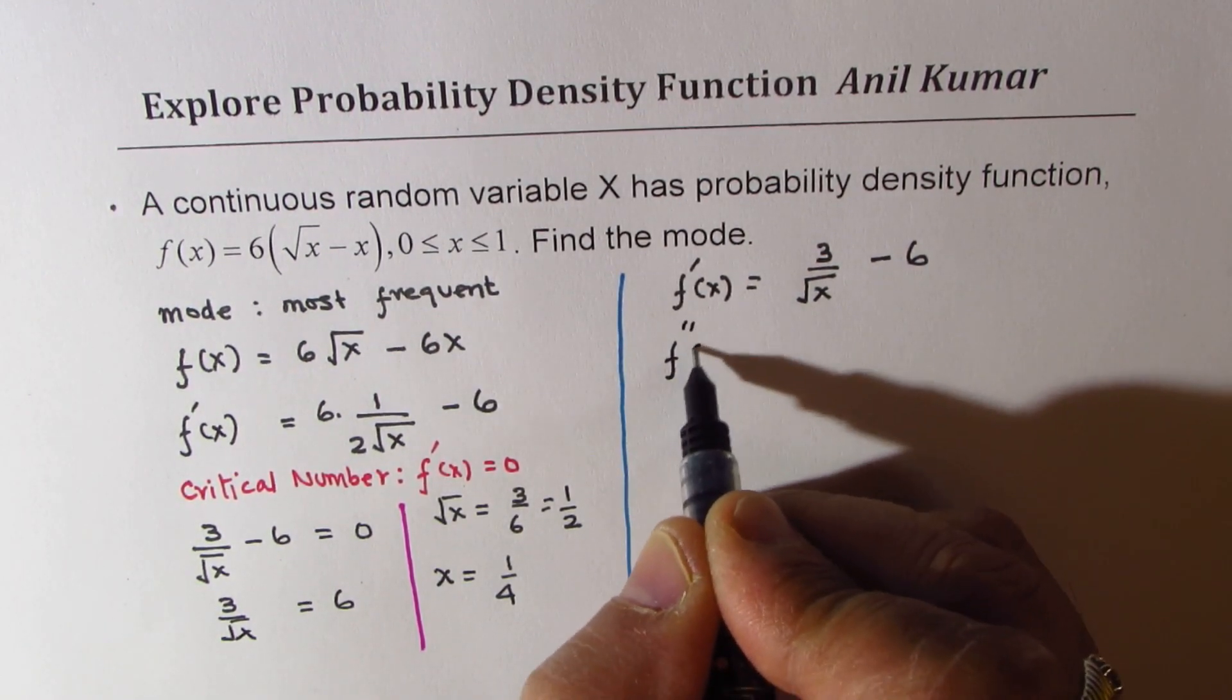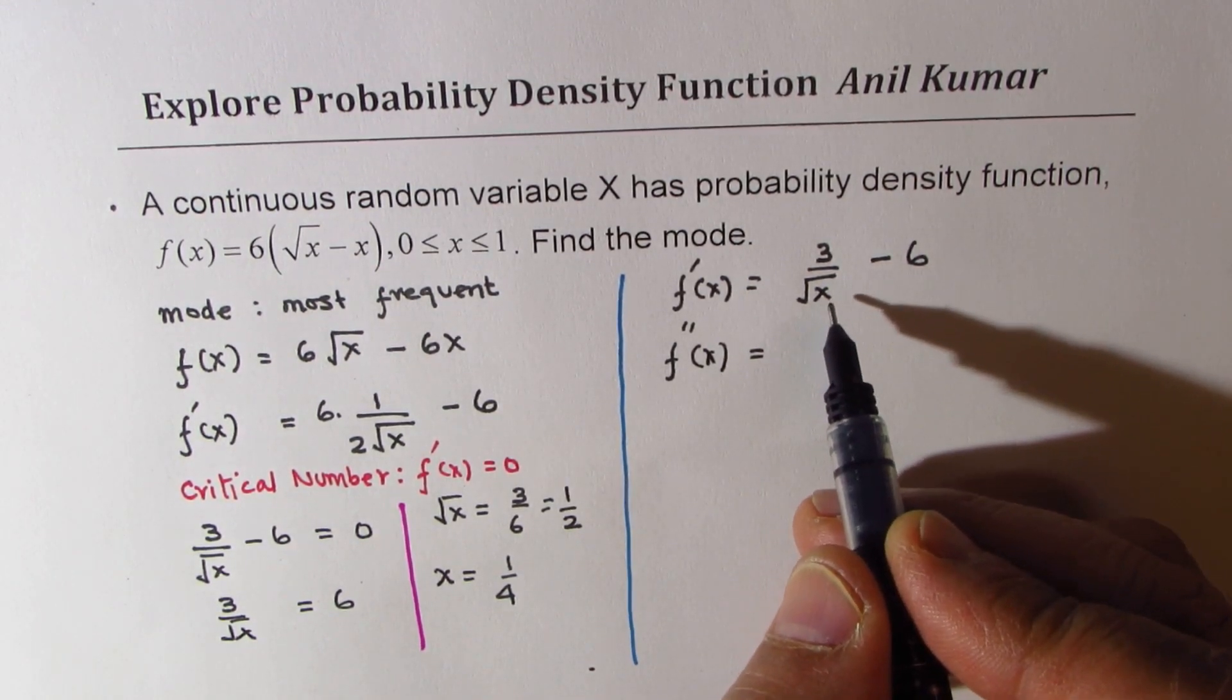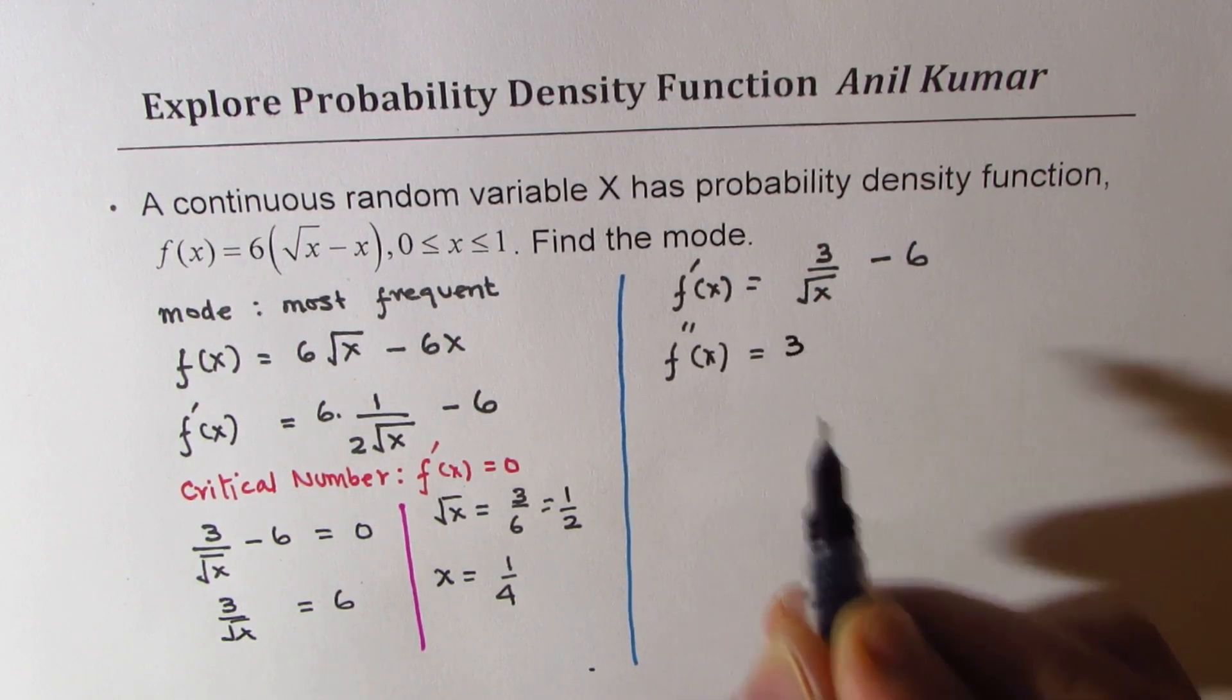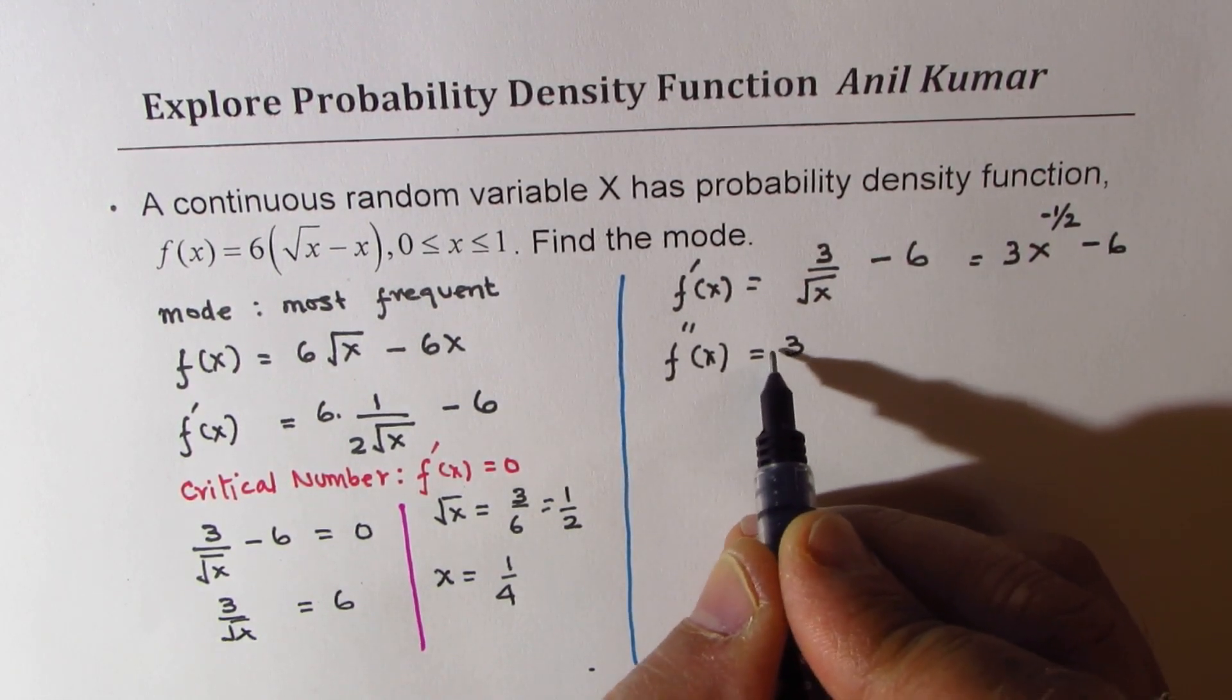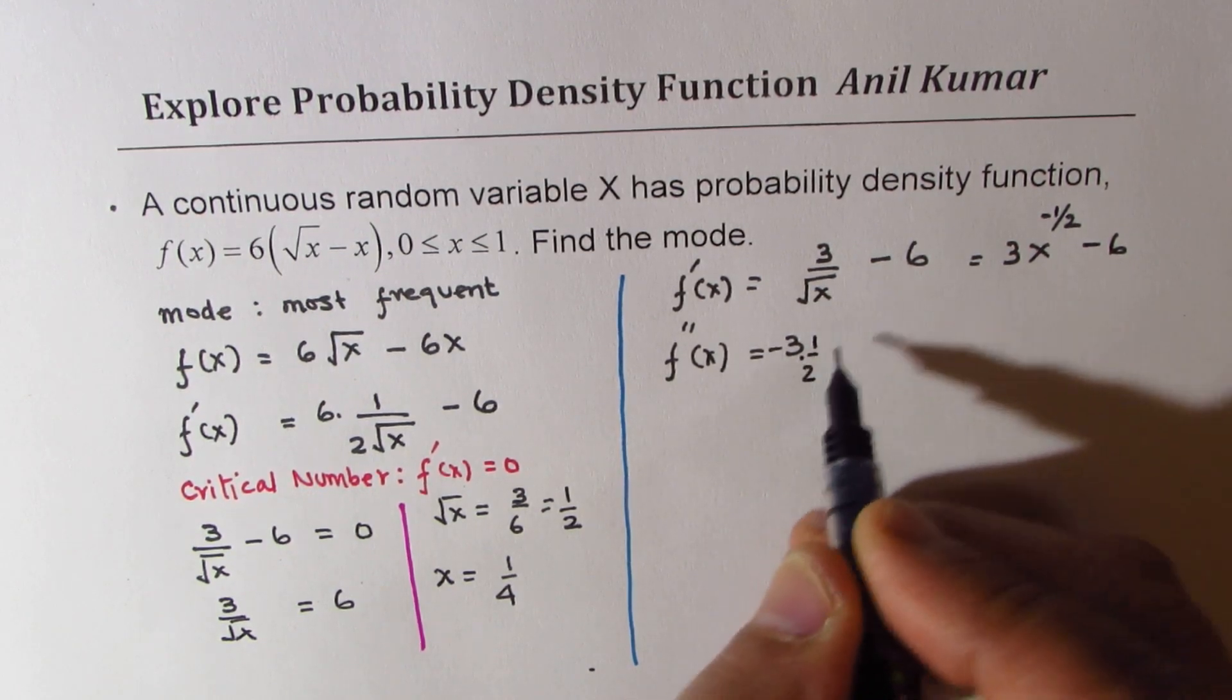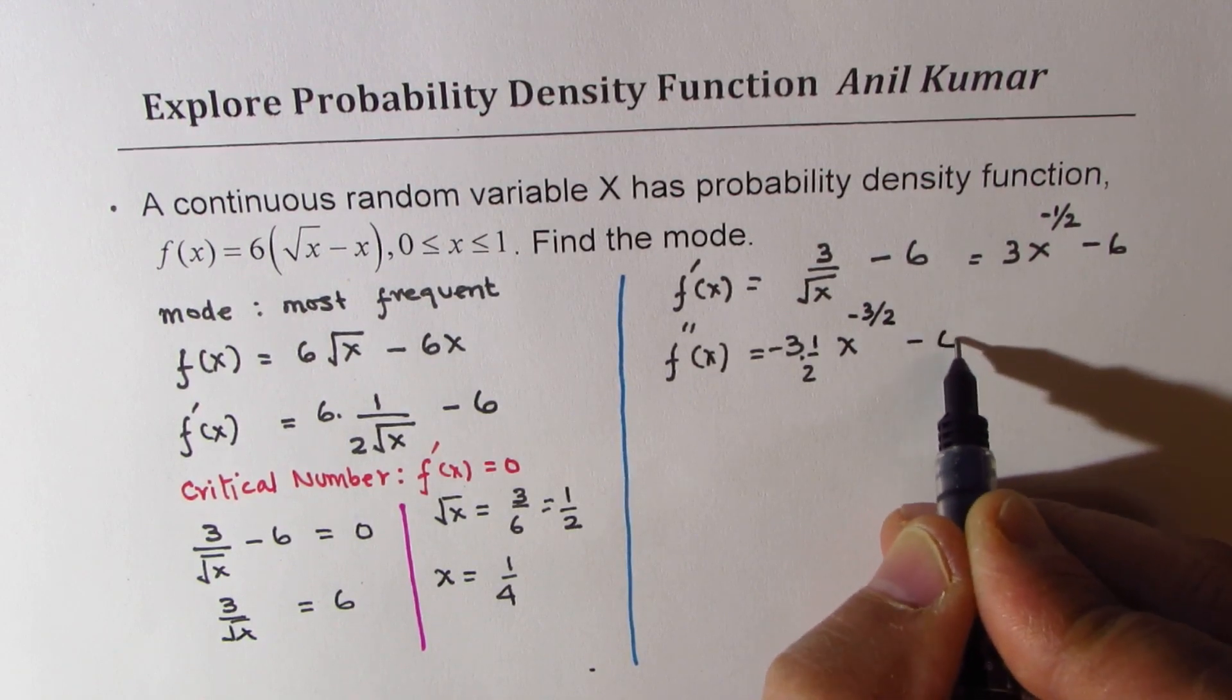The second derivative of this function, this is x to the power of minus half. So we get 3 times x to the power of minus half minus x. That gives you 3 times, with a negative sign, half, x to the power of minus 3/2 minus 0. So this is negative.